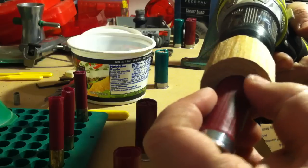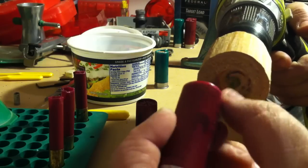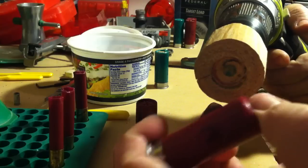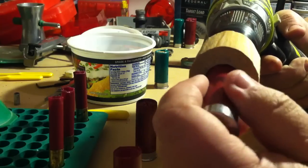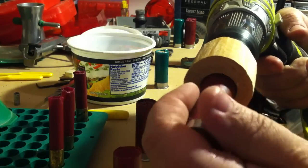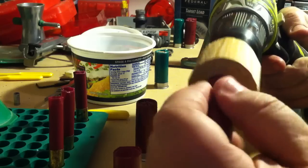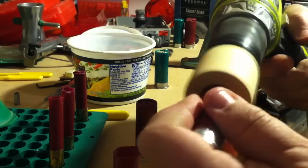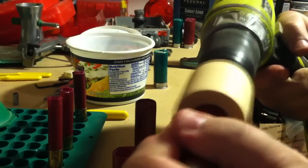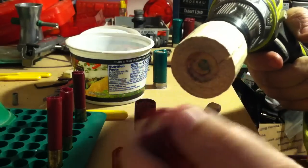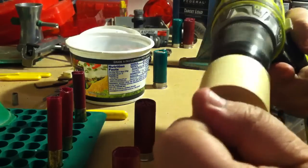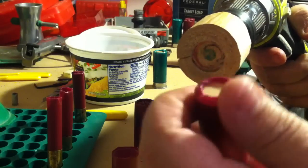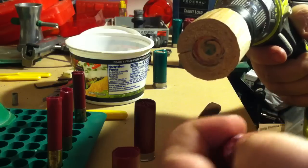I just slowly apply pressure as I'm going forward. If you go too fast, you'll melt it off and it can make a little bit of a mess, leaves some gunk on the edges, and it might hang up in your cylinder when you're trying to cycle. So I try to just take my time and make it as smooth as I can.